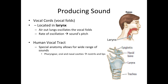Moving on to how we produce sound — the basic anatomy consists of two sets of parts: one acts as a sound source and the other as a filter. Air exhaled from the lungs drives oscillations of the vocal cords. The vocal cords are folds of mucous membrane attached to the vocal muscles, located in the larynx — our voice box, which is the organ of our voice.